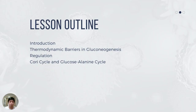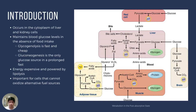Good day, students. Welcome to our lesson on gluconeogenesis. Gluconeogenesis simply means the synthesis of new molecules of glucose. This process occurs in the cytoplasm of liver and kidney cells. Later on, we will learn why it is only the liver and the kidney that are able to catalyze gluconeogenesis.